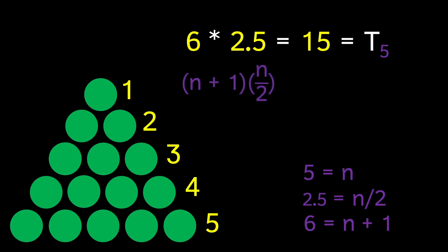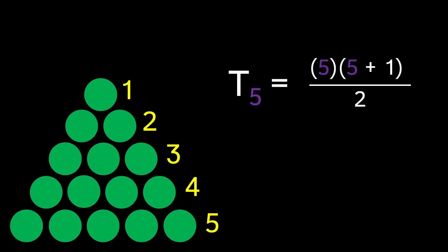This means that n plus one times n over two equals the total number of dots because of the equalities we just discovered. And if we rewrite this expression just a tiny bit, we get the formula that we saw a few minutes ago. And the whole process we just went through was how mathematicians derived it.